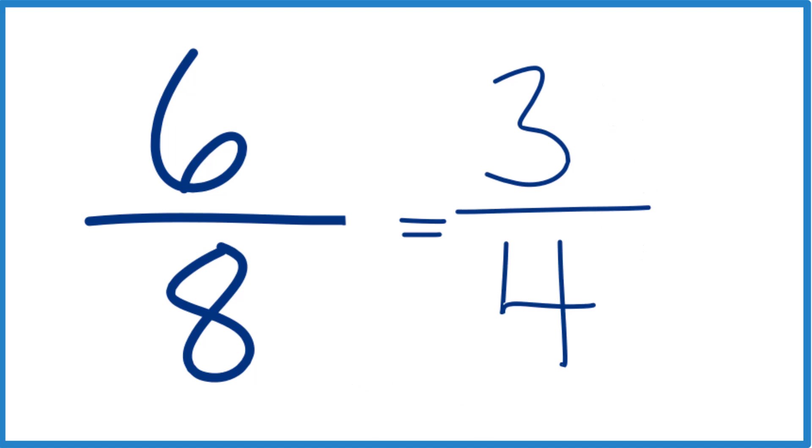So when you simplify the fraction or you reduce the fraction six-eighths down to lowest terms, you get three-fourths. And these are equivalent. If you divide three by four or six by eight, you get 0.75 for both of them.